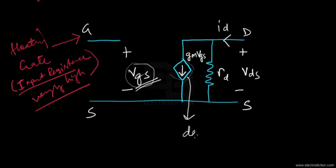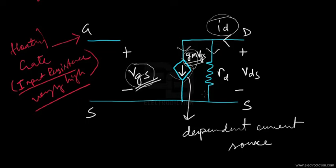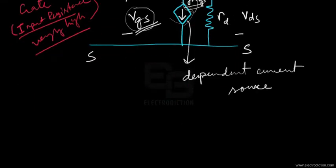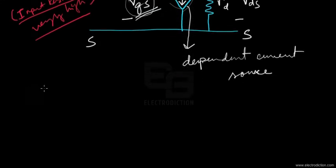In this model we have a dependent current source. This current source supplies current at the output terminal, and the current flowing through the output terminal has two components: one through the current source, whose magnitude is G_M · V_GS, and the other component through R_D — the drain resistance.